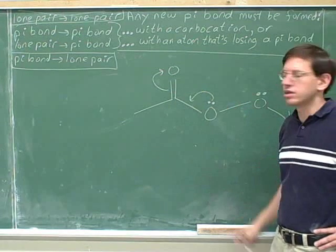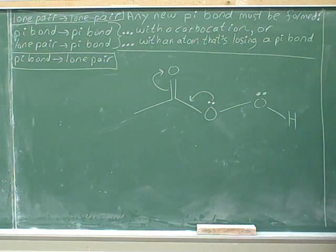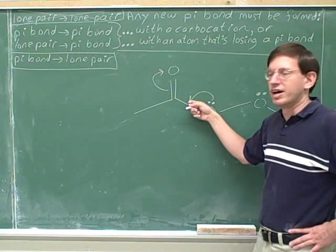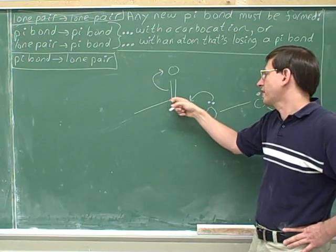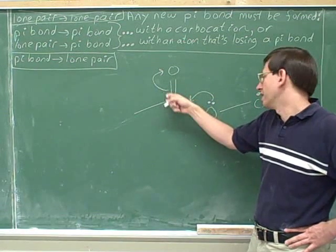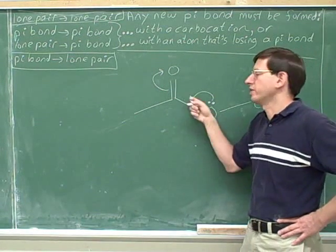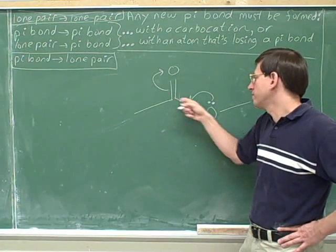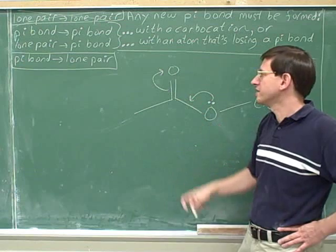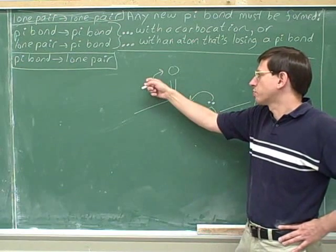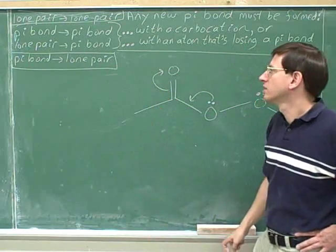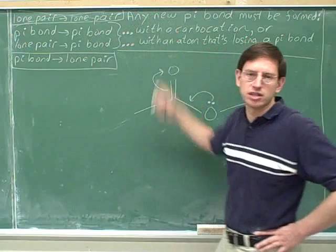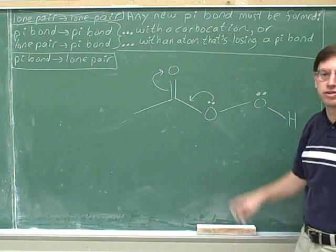How about if we erase this arrow? Do these arrows work now? Here we're forming a pi bond — that's when we have to be careful. This is not a carbocation, but that's okay because we're making room for the new pi bond by losing this pi bond. It's okay for this carbon to form a new pi bond here because it's losing a pi bond there. And do we have to worry about this other arrow exceeding an octet? No, because it's forming a lone pair. Lone pairs don't exceed octets — only forming pi bonds is when we have to be careful. So these arrows are okay.